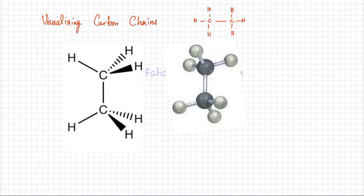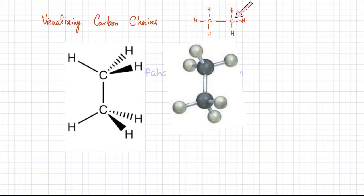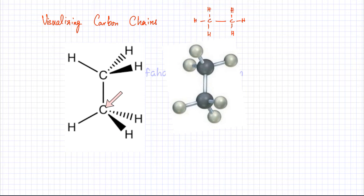Now let's visualize carbon chains. In the ethane molecule, the shape is determined by the central carbon atom. Each carbon is making four bonds, so the geometry around each carbon atom is tetrahedral with all angles of 109.5 degrees. Similarly, the other carbon atom is also making four bonds, so its geometry is tetrahedral as well.